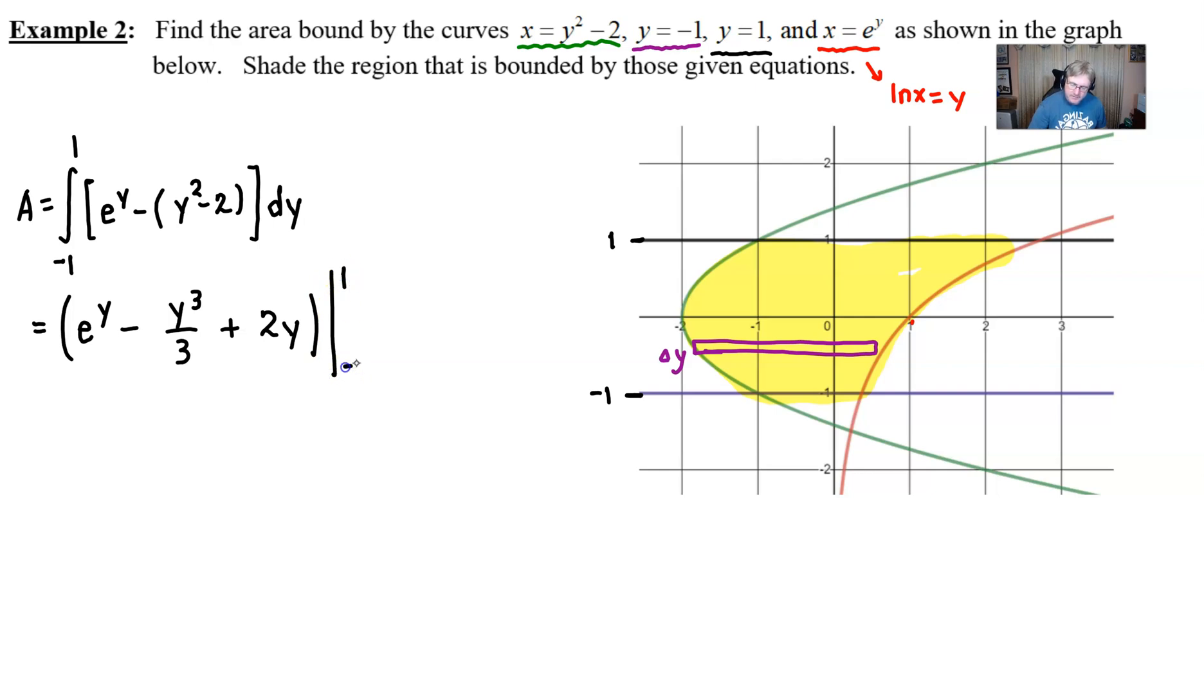All of this expression will be evaluated between 1 and -1 and subtracted. We'll plug 1 in first: e^1 or e minus 1³/3 which is 1/3 plus 2 times 1 which is 2. Subtract the quantity: now we'll place -1 in for y. e^(-1) is 1/e minus - this is tricky - (-1)³ is -1/3. The two negatives I'm going to take care of right now so I don't have three negatives hanging around. Then we have 2 times -1 which is just -2.